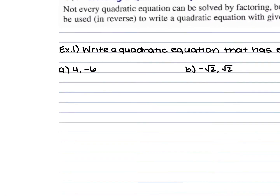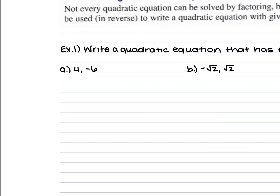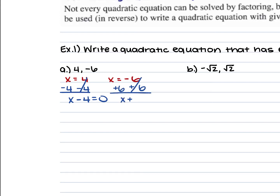Looking at example 1a, we have 4 and negative 6. This tells us that x is equal to 4 and x is equal to negative 6. If we move the 4 over, we subtract it from each side and get x minus 4 is equal to 0. For the 6, we add it to both sides and get x plus 6 is equal to 0.